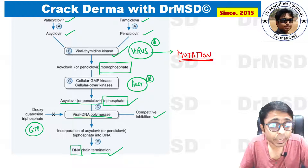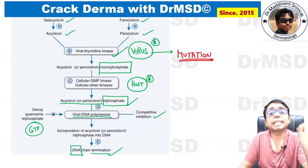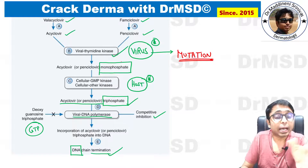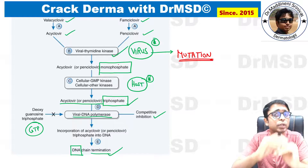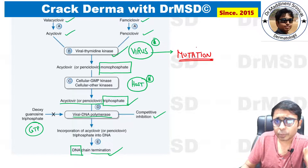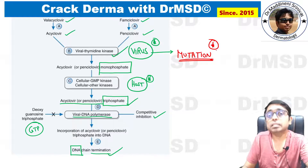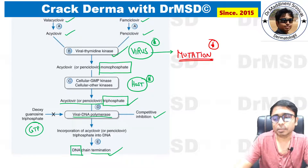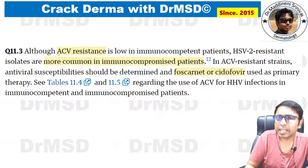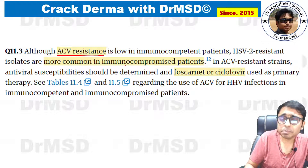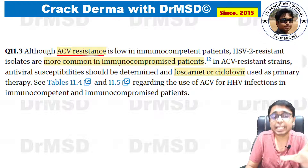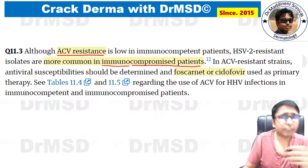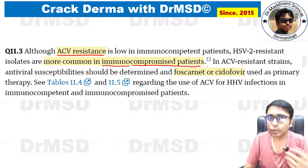The virus underwent a mutation because of which this thymidine kinase will no longer convert valacyclovir, acyclovir, famciclovir, or penciclovir into the respective monophosphates. If this step is inhibited by mutation of the herpes virus, then the drug is not going to work. This is the first, foremost and most important step. Acyclovir resistance is rare but is found in immunocompromised persons — those with HIV infection, those on chemotherapy, or those on steroids.